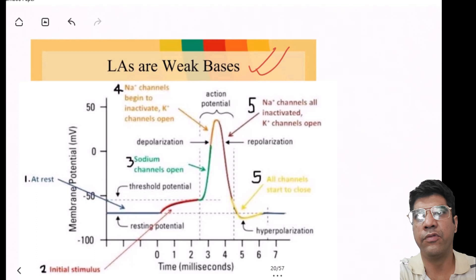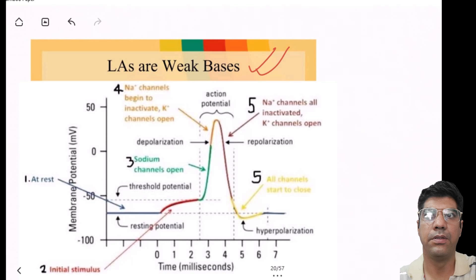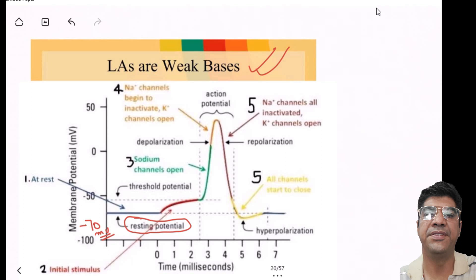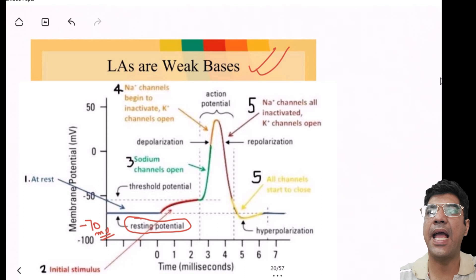Now let us discuss the mode of action, starting with normal nerve physiology. Neurons have a resting membrane potential of around minus 70 millivolts, meaning the inside of the neuron is negatively charged compared to the outside. This resting state is maintained by the permeability of cell membranes to ions and the activity of ion channels.